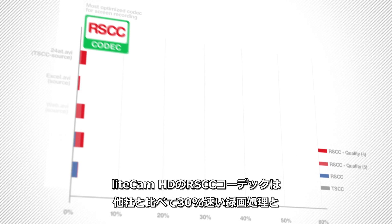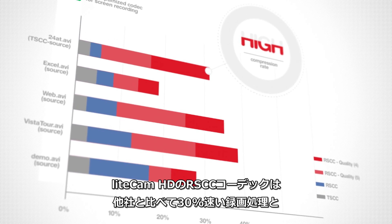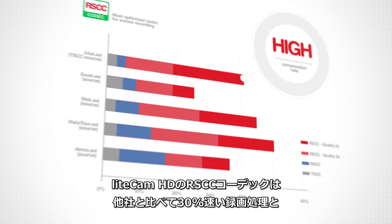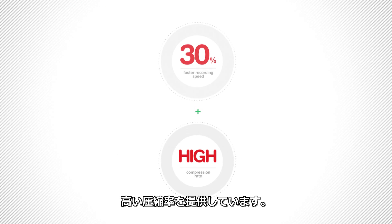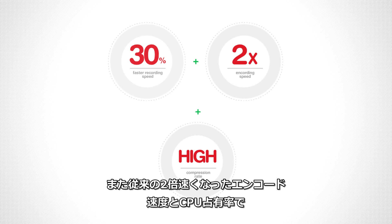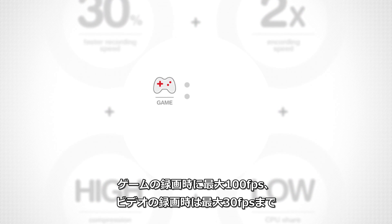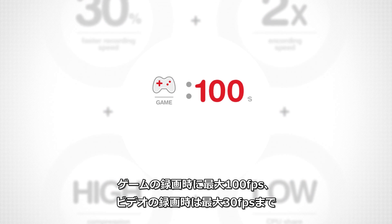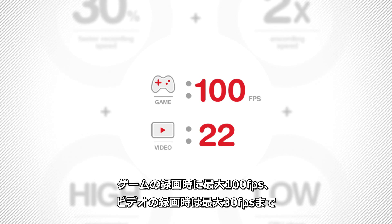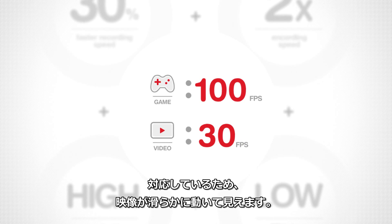LiteCam HD's RSCC codec offers a higher compression rate and 30% faster speed compared to other companies' codecs. RSCC boosts encoding speed up to twice as fast as before, and through low CPU usage, you can maintain up to 60 frames per second during game recording and 30 frames per second during video recording, without compromising picture quality or speed.